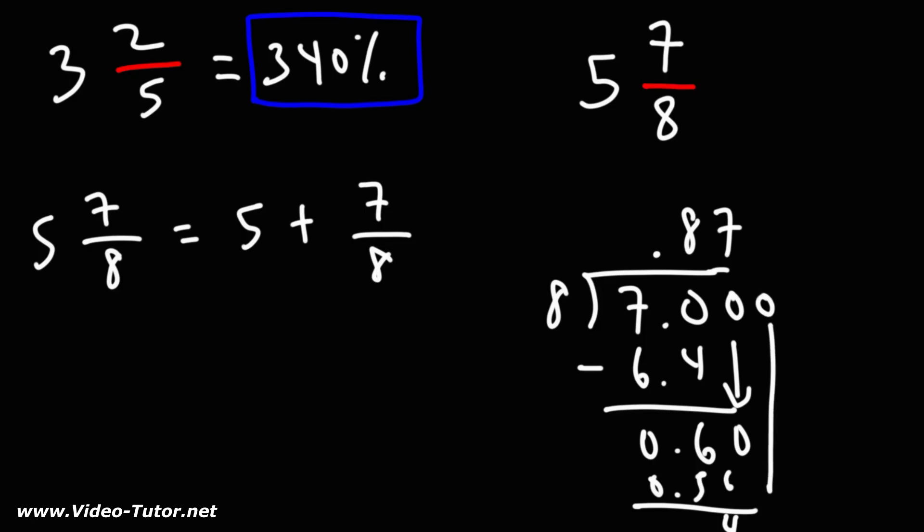If we add another 0, we can treat this as 40. 8 goes into 40 five times. And then 8 times 5 is 40. We'll get a 0 as a remainder. So we can stop here.